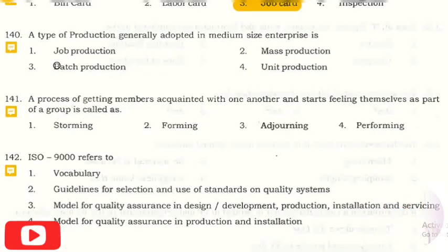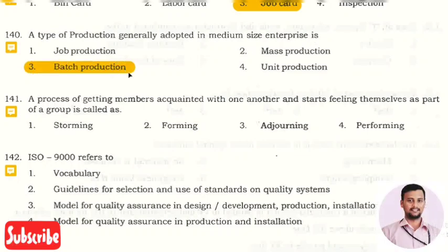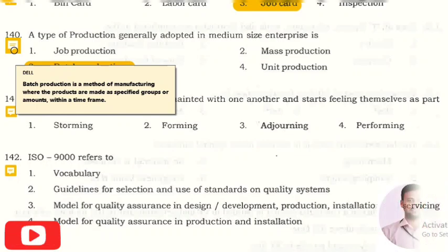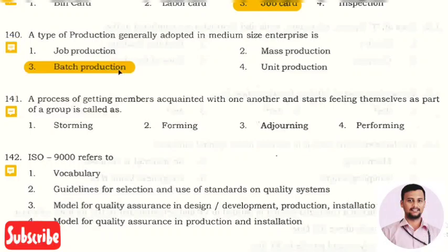The next question is: a type of production generally adopted in medium size enterprises is? The right option is option three, that is batch production. So what is this batch production? Batch production is a method of manufacturing where the products are made as specified groups or amounts within a time frame. That is batch production. So generally these are included in medium size enterprises.